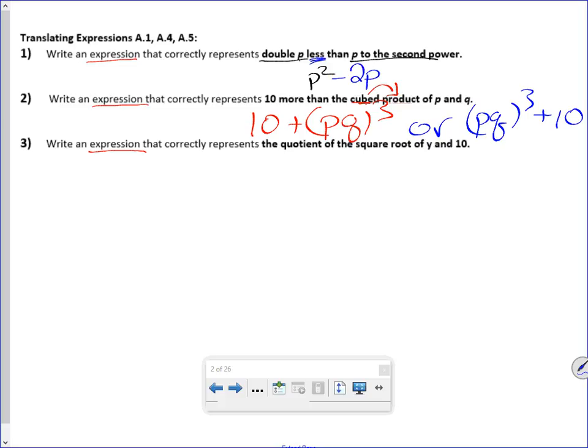The common mistake people make, and it's incorrect, so I'll write it over here in red, is they write the problem like this. But this isn't 2p less than p squared. This is p squared less than 2p. Remember, in subtraction you're taking away, and what you're taking away you write second in a subtraction problem.